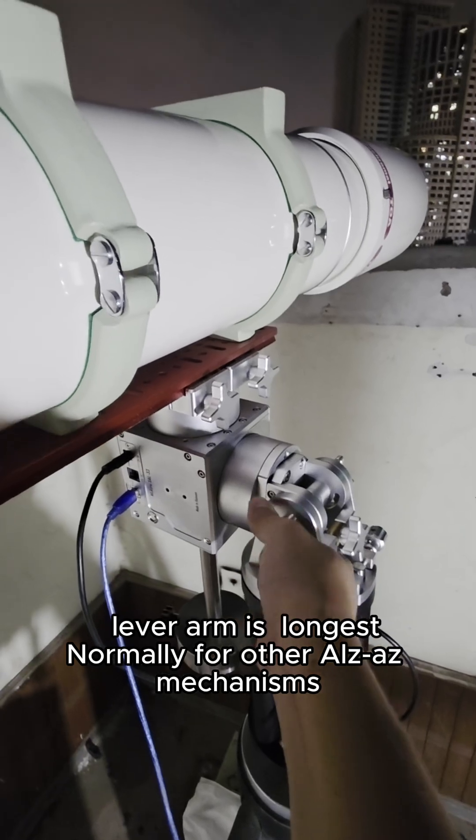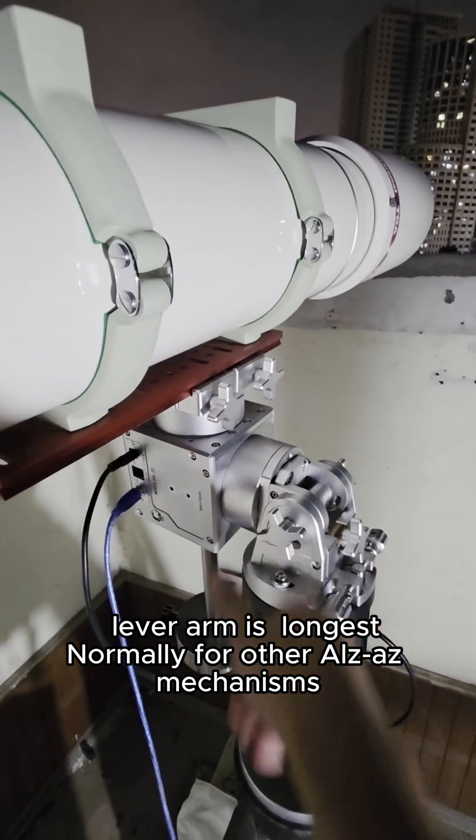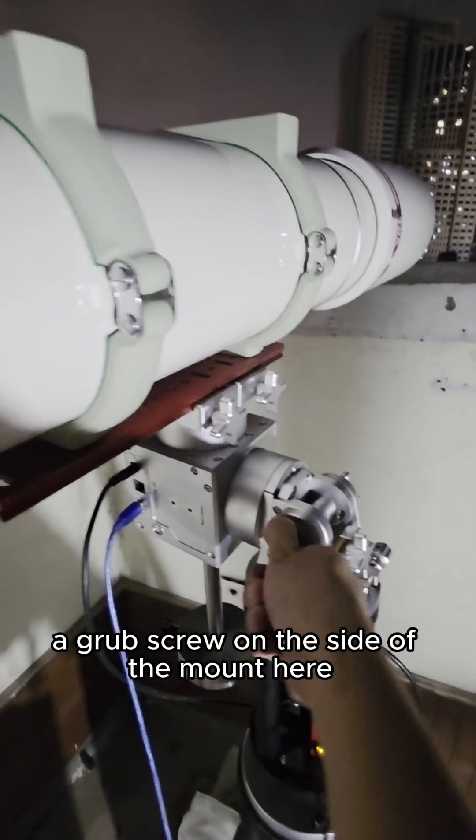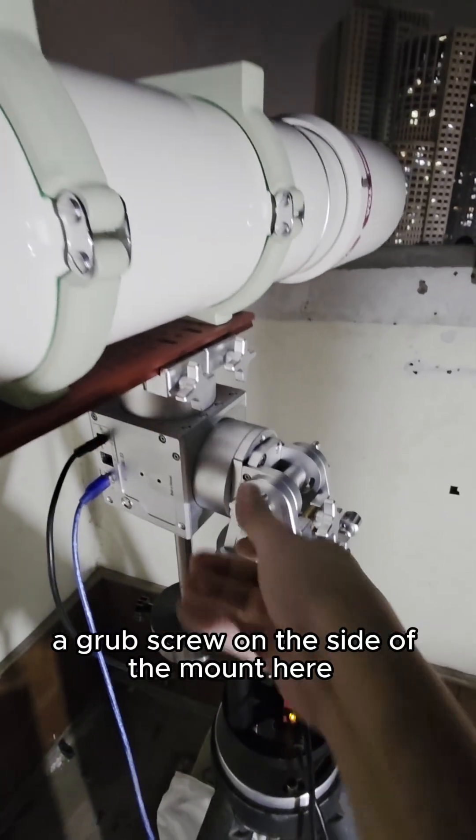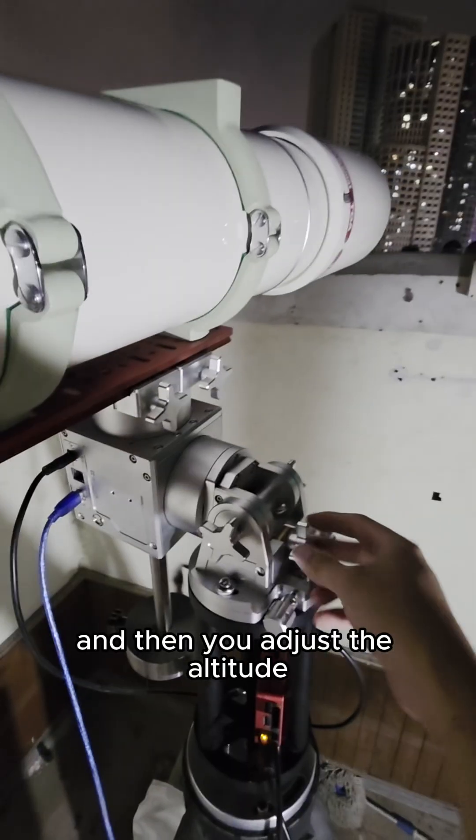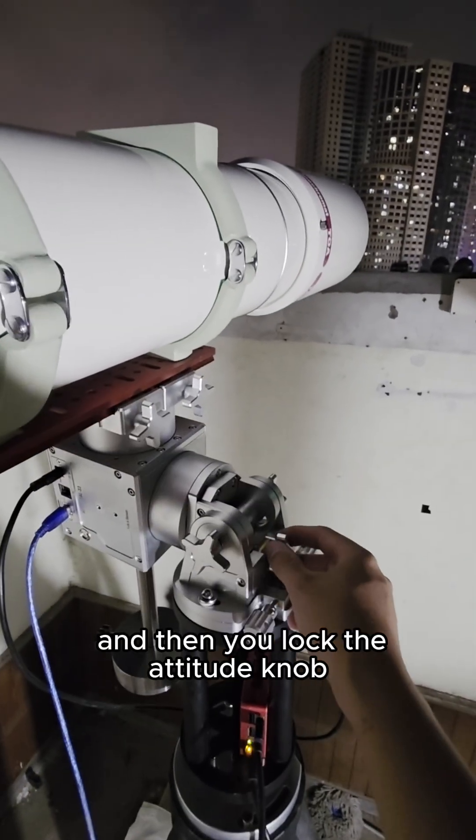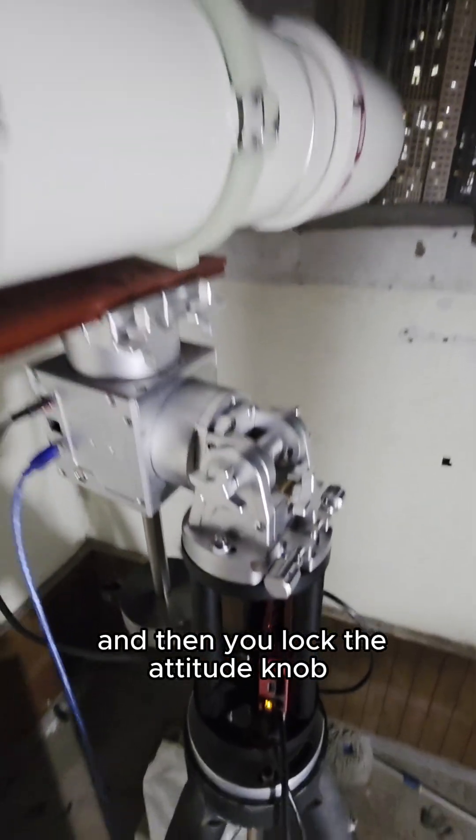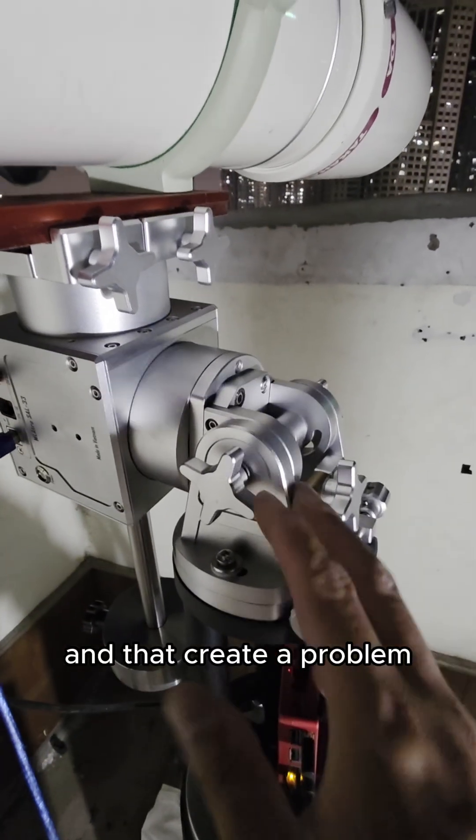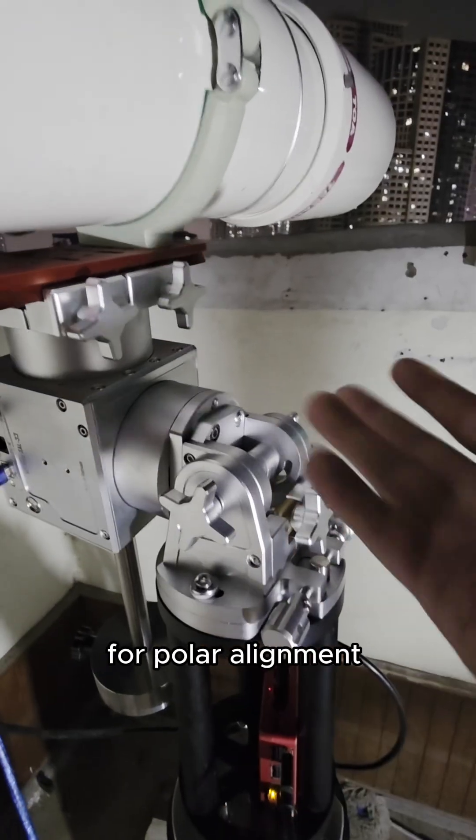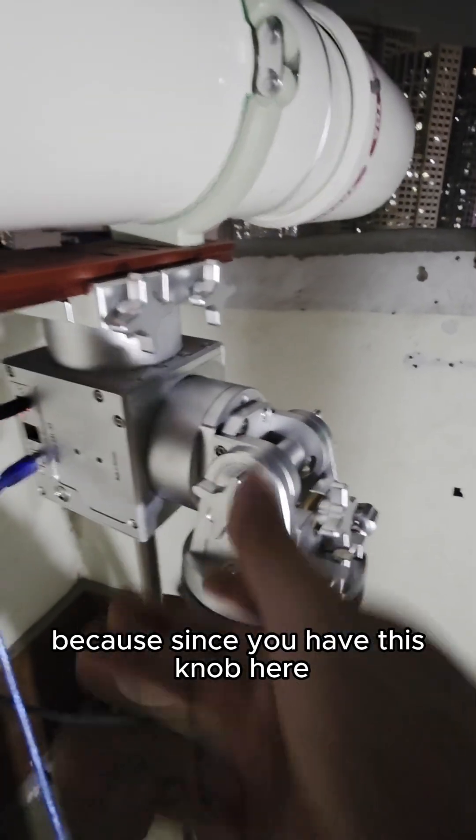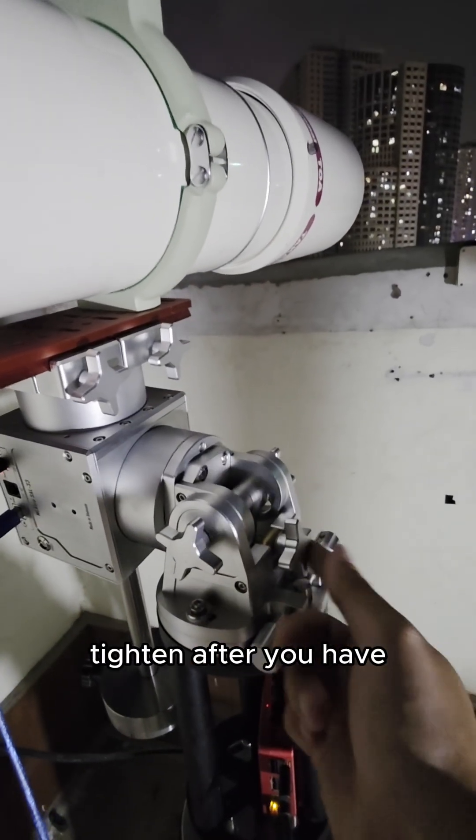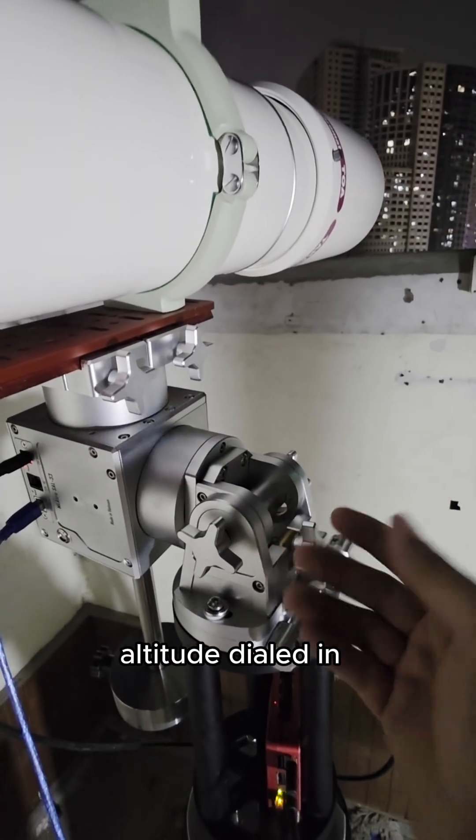Normally for the other ALS mechanism, you will loosen this grub screw on the side of the mount here. And then you adjust the altitude knob here. And then you lock the altitude knob. And that creates a problem for polar alignment, because since you have this knob here tightened after you have got the altitude dialed in,